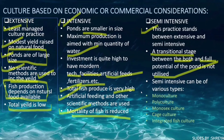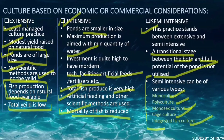Semi-intensive culture can be of various types. It can be monoculture, polyculture, monosex culture, cage culture, and integrated fish culture.